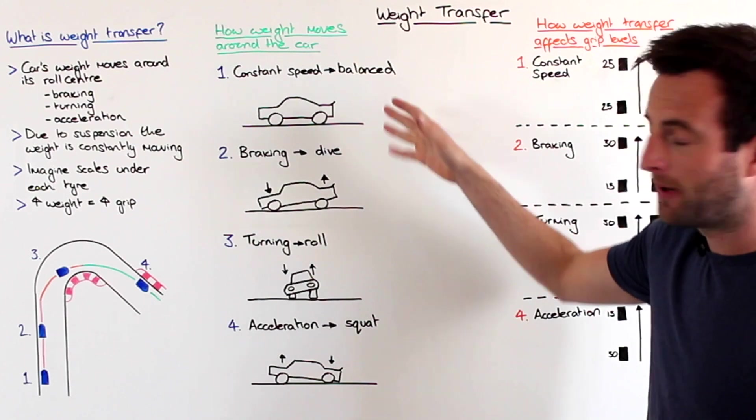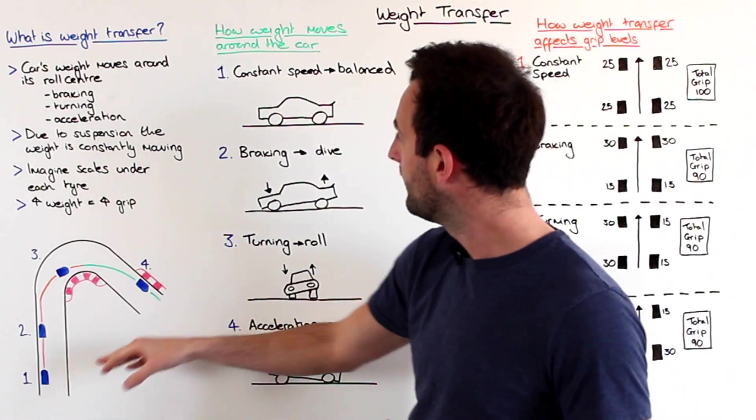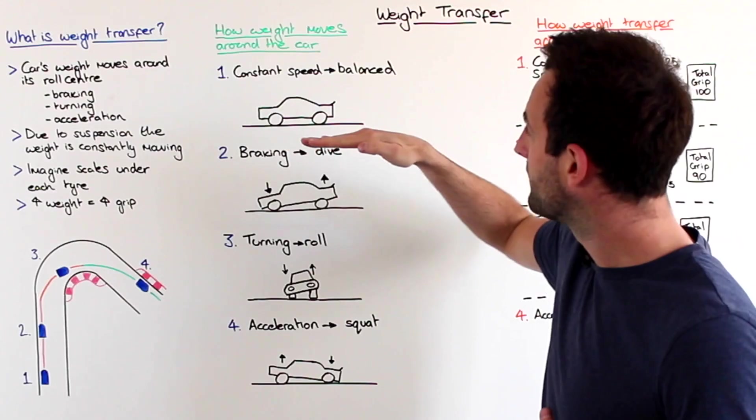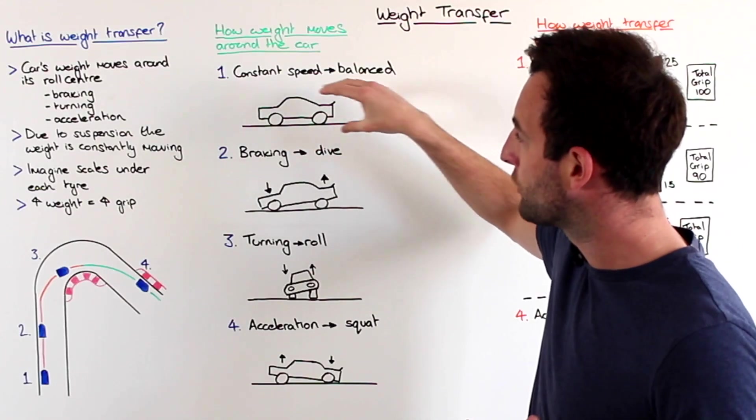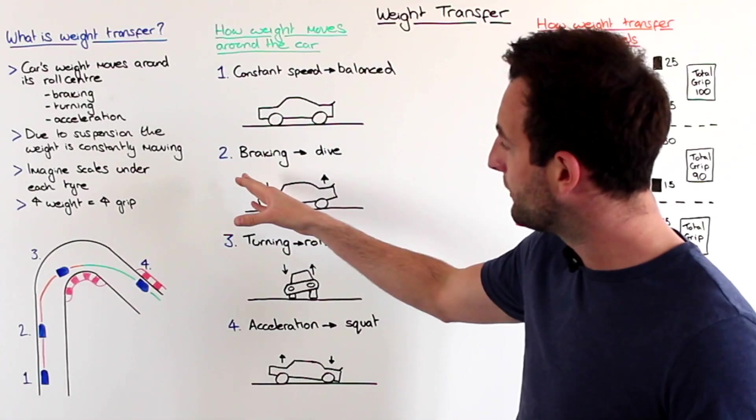So as you can see here by my fantastic drawings, at point number one here, the platform of the car is completely flat. The grip is balanced evenly through each tire. At point number two,